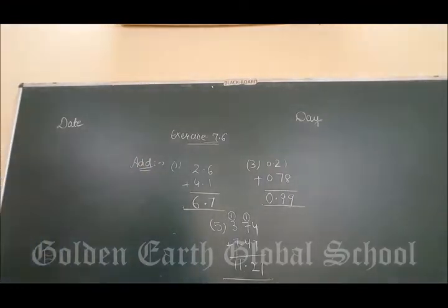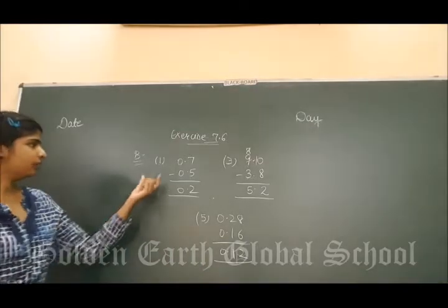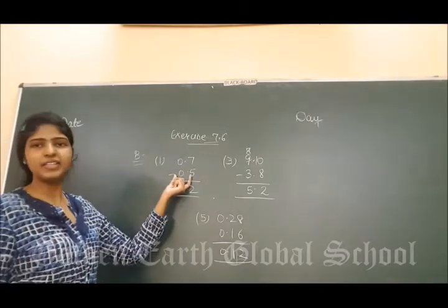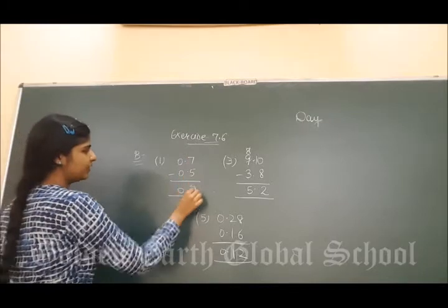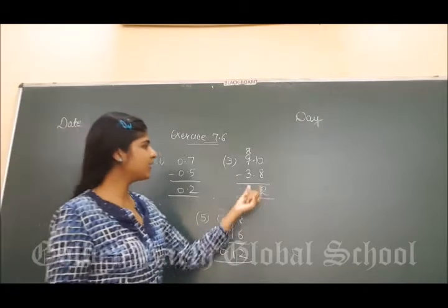Now, in the same way you have to solve second and fourth part. Now, the B part is again very simple, subtraction. First question is 0.7 minus 0.5: 7 minus 5 is 2, 0 minus 0 is 0. In the same way, do the second part.